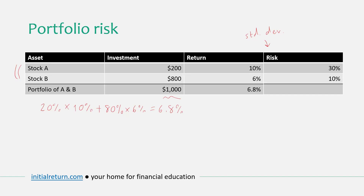To capture diversification we either need to know the covariance between the two stocks' returns, or the correlation coefficient — the two are related to one another. We can define the correlation between the two stocks as the scaled covariance: it is the covariance between stocks A and B divided by the product of their standard deviations. So to compute portfolio risk we either need to know the covariance, or the correlation, from which we can compute the covariance.